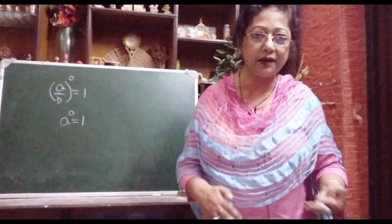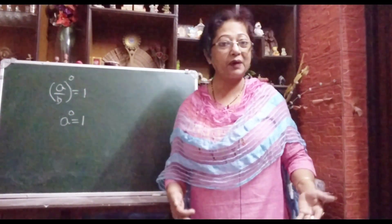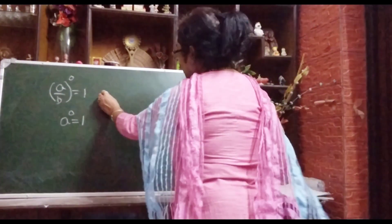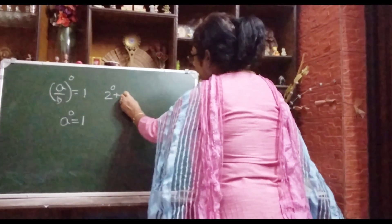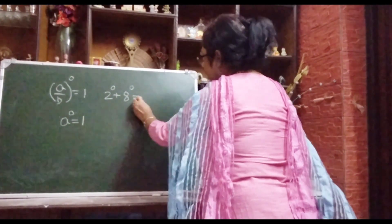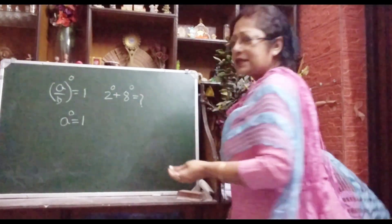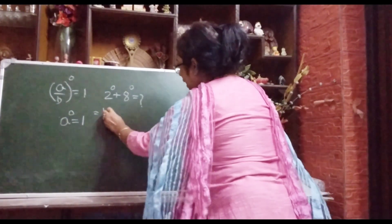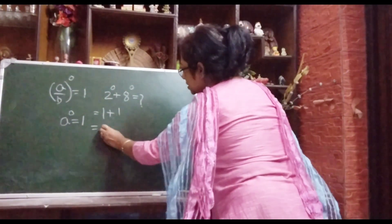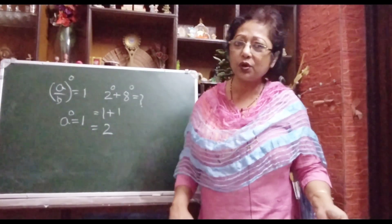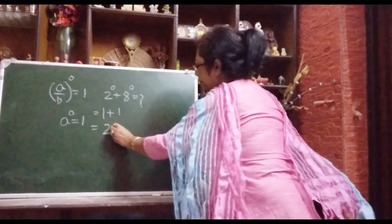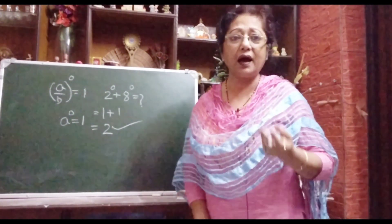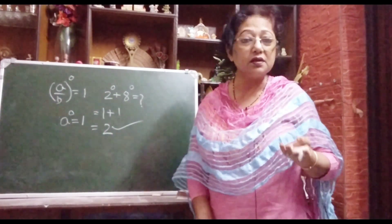All of you learned this and also apply it when doing sums, but you do not know why you are writing 1. Suppose you have a sum: 2 to the power 0 plus 8 to the power 0 equals what. You write 2 to the power 0 equals 1, plus 8 to the power 0 equals 1, so the answer is 2. You do it this way and your sum is absolutely correct, but you never asked why 2 to the power 0 equals 1.